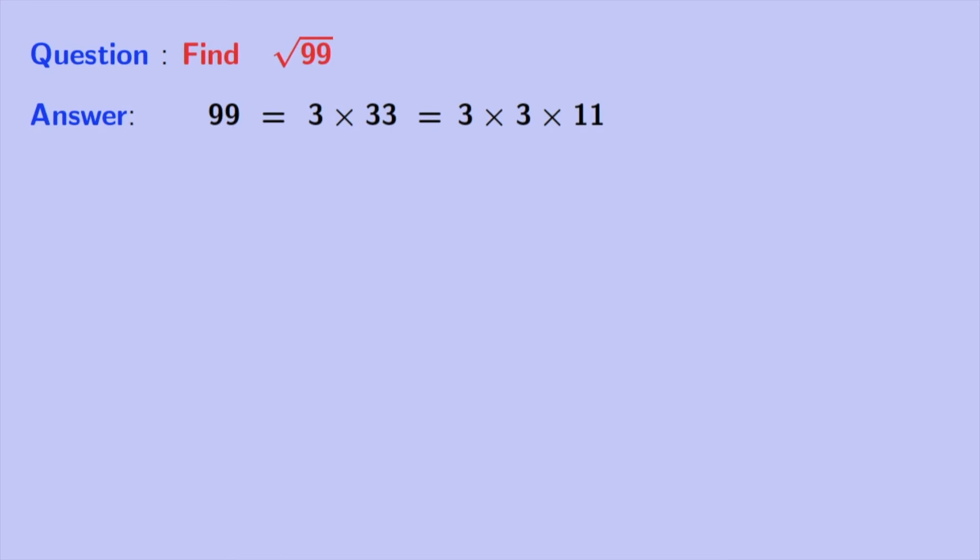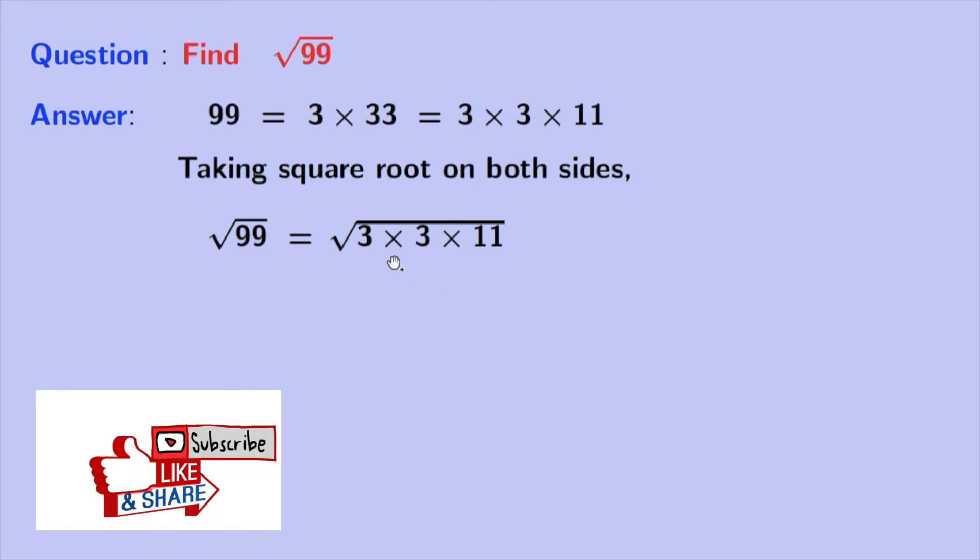So let's take square root on both sides. Taking that, we have square root of 99 is equal to square root of 3 times 3 times 11. Now we can rewrite it as square root of 3 times 3 times root 11.